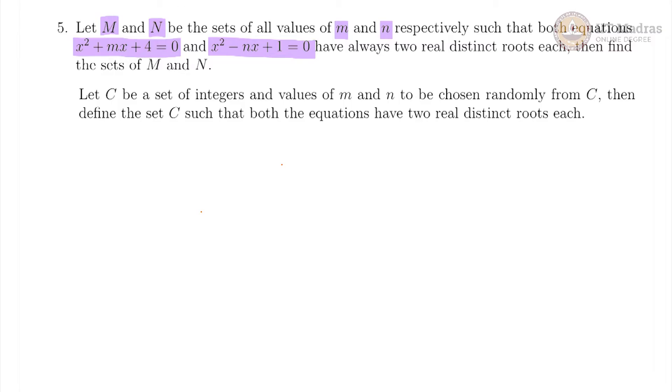Let us finish this part first. So for a quadratic equation ax² + bx + c = 0 to have distinct real roots, the discriminant which is basically the value b² - 4ac should be greater than 0.